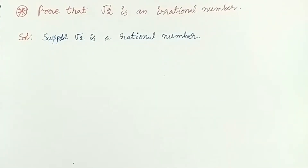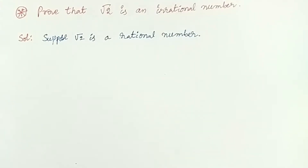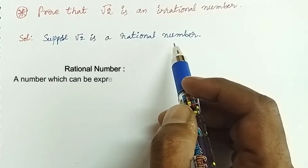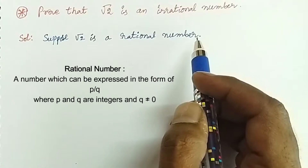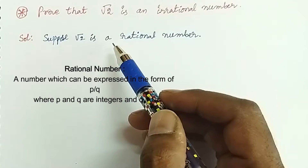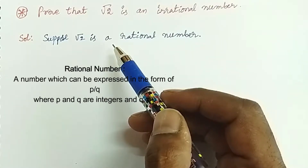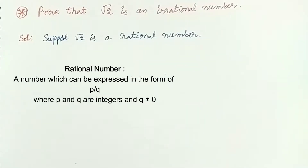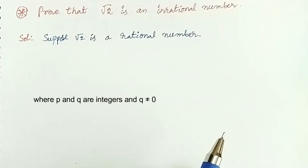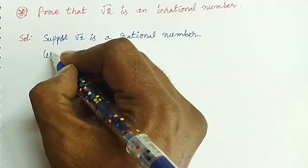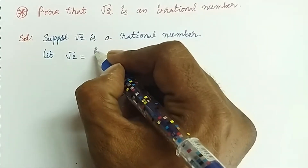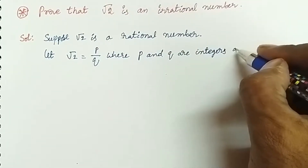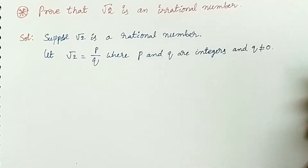Now, the rational number definition: a number which can be expressed in the form p by q, where p and q are integers and q is not equal to 0. So let root 2 be equal to p by q, where p and q are integers and q is not equal to 0. This is the definition of a rational number.